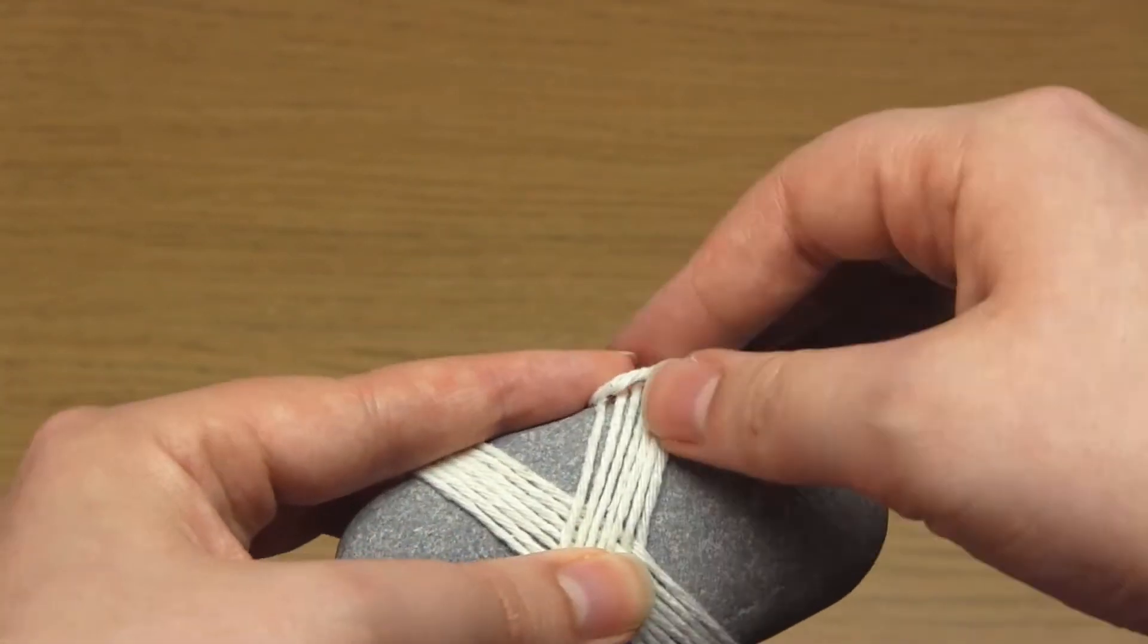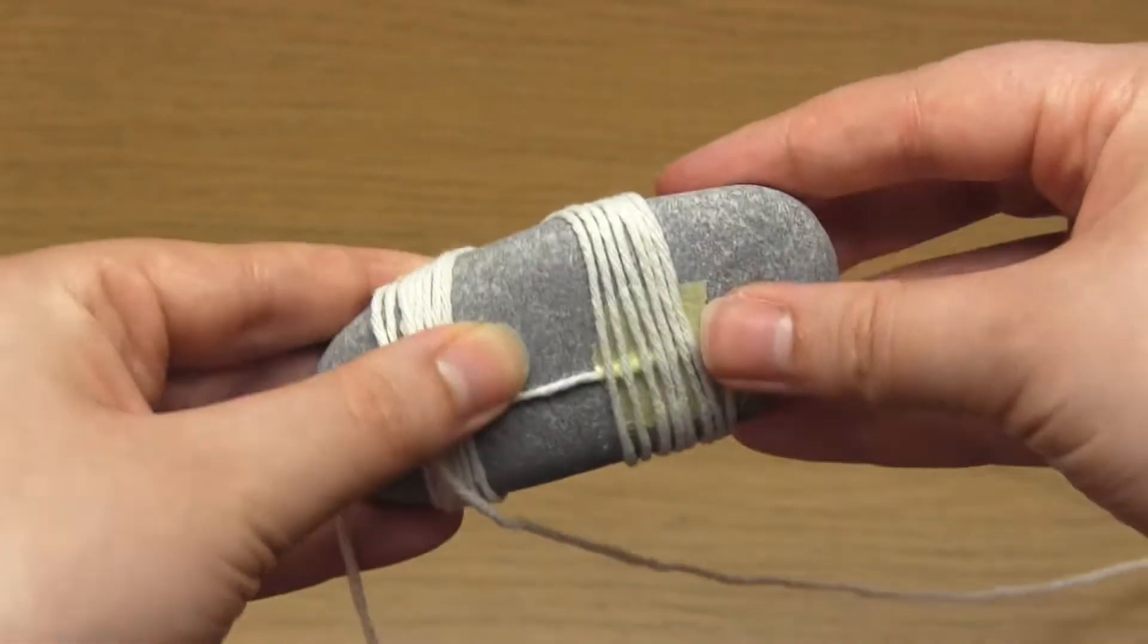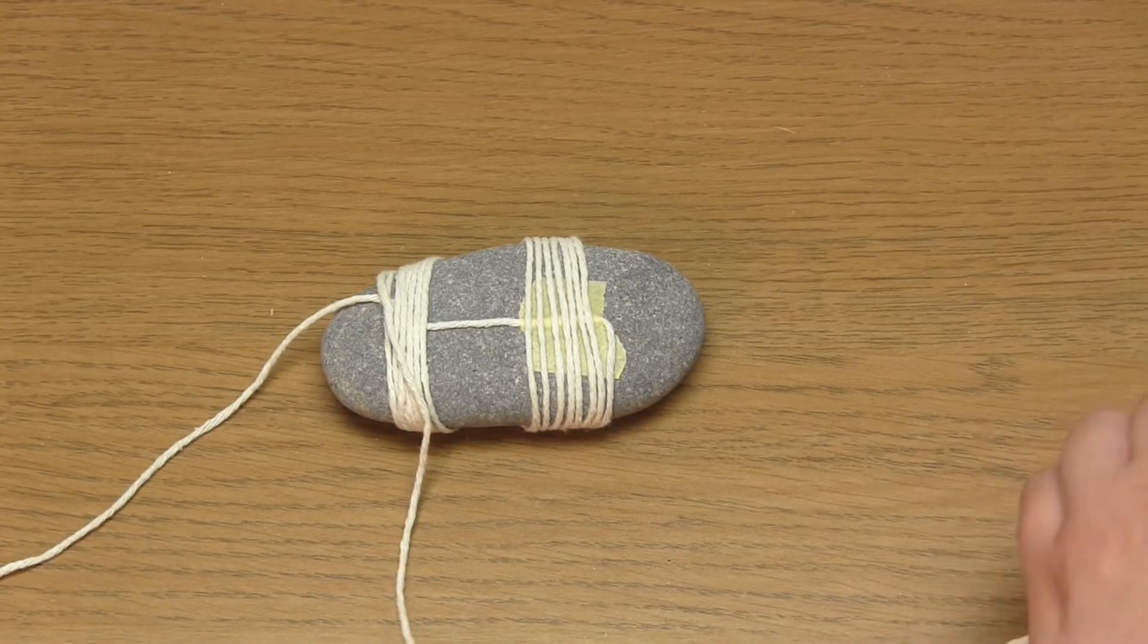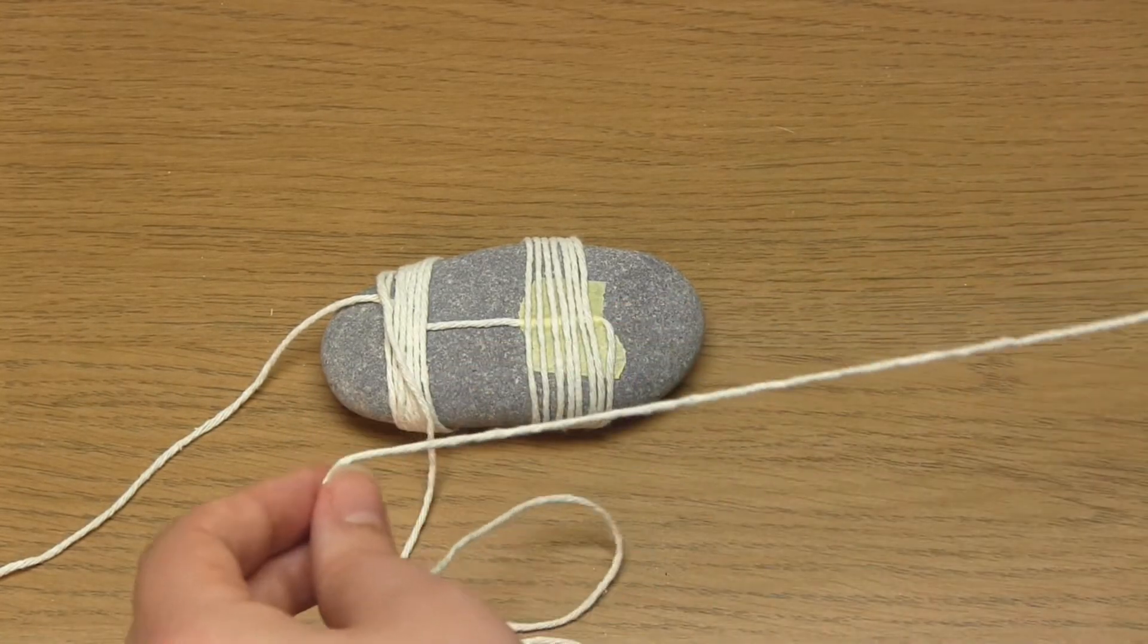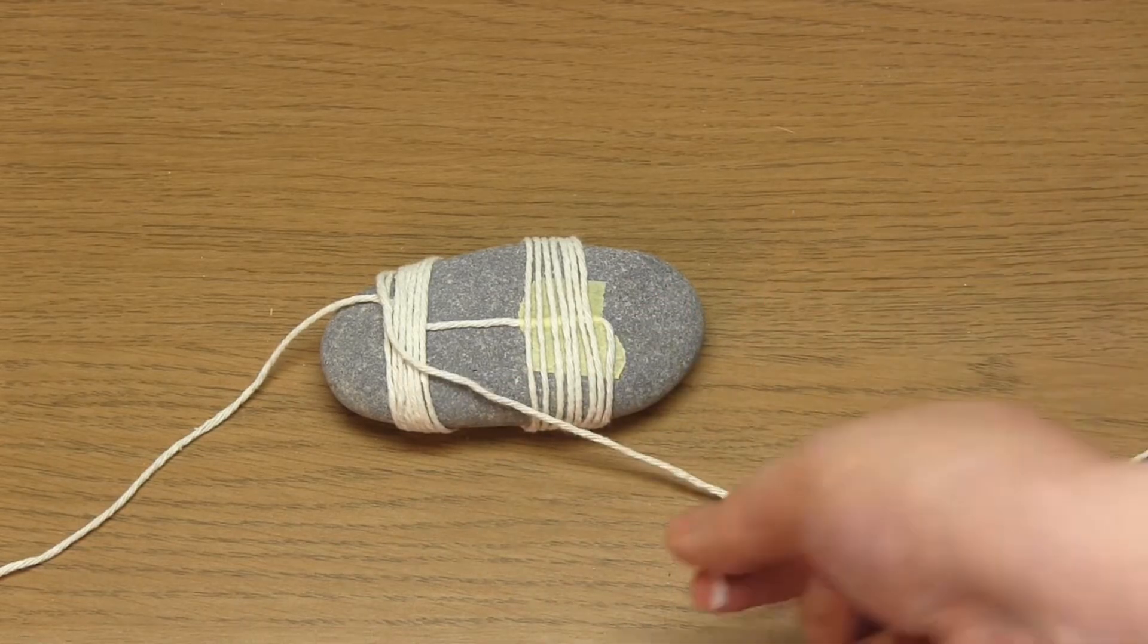Make sure you finish wrapping the yarn at the top of the pebble where the yarn tail is. Cut your yarn from the ball of yarn, leaving at least 15 inches or so. Feed this yarn end into your yarn needle.